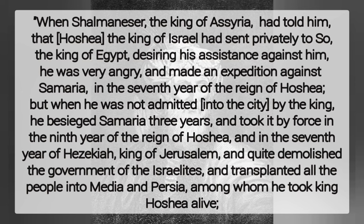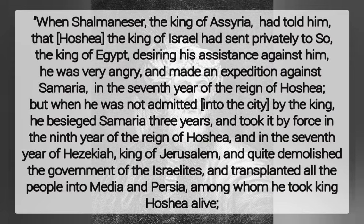We quote from Antiquities of the Jews: "When Shalmaneser, the king of Assyria, had learned that Hosea, the king of Israel, had sent secretly to So, the king of Egypt, desiring his assistance against him, he was very angry and made an expedition against Samaria in the seventh year of the reign of Hosea. When he was not admitted into the city by the king, he besieged Samaria three years and took it by force in the ninth year of the reign of Hosea, and in the seventh year of Hezekiah, king of Jerusalem, and quite demolished the government of the Israelites and transplanted all the people into Media and Persia, among whom he took king Hosea alive. When he had removed these people out of their land, he transplanted other nations out of Puthah — a place so called, for there is still a river of that name in Persia — into Samaria and into the country of the Israelites. So the 10 tribes of the Israelites were removed out of Judea 947 years after their forefathers had come out of the land of Egypt." — Flavius Josephus, Antiquities of the Jews.